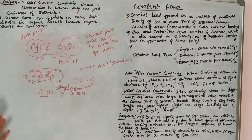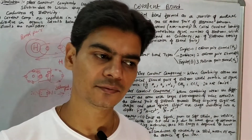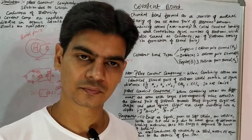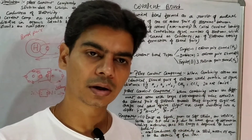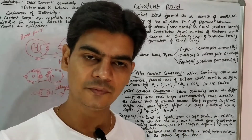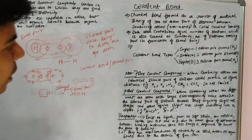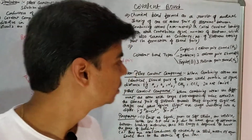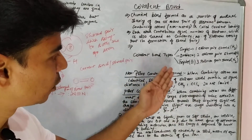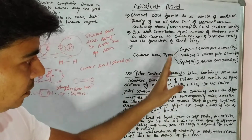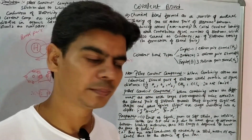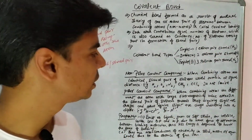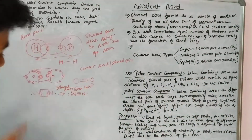Covalent bonds are formed between nonmetals and formed after sharing of one or more pairs of electrons. Depending on the number of pairs of electrons, there is a single, double, or triple covalent bond between nonmetals. So there are three types of covalent bonds: single bond due to sharing of one pair of electrons, double bond due to sharing of two pairs of electrons, and triple bond due to sharing of three pairs of electrons.